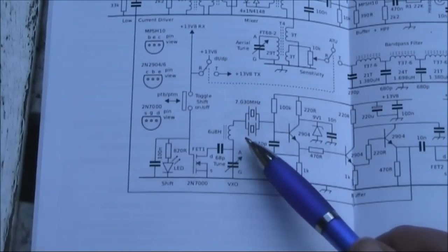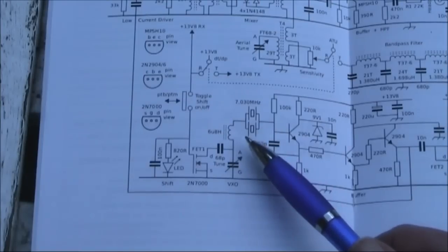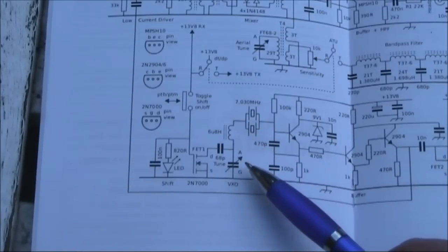If you don't, then your pulling range will be different. You may get excessive pulling range which causes the VXO to be unstable, or you might not get enough range, which makes it a lot harder to get contacts.